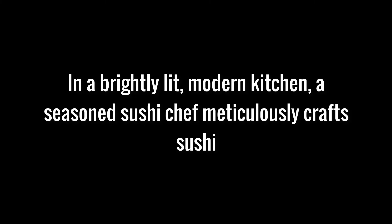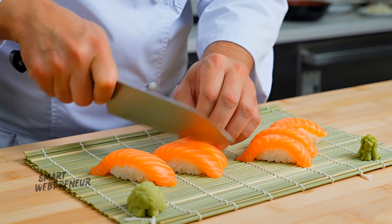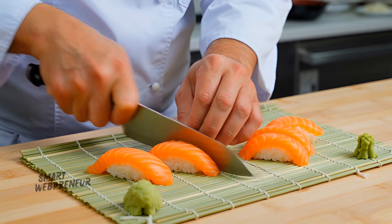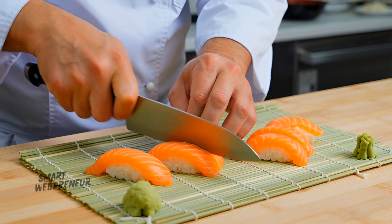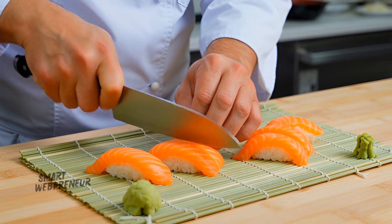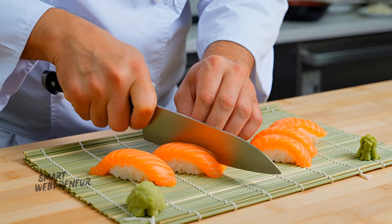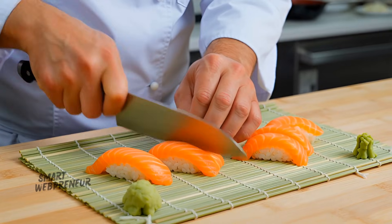Here's the next prompt I tried. In a brightly lit modern kitchen, a seasoned sushi chef meticulously crafts sushi. I was curious to see how the AI would handle detailed hand movements and professional cooking techniques. The attention to detail here is quite impressive. However, the cutting action is slightly off if you look closely. That said, the authentic kitchen environment is spot on, and the sushi making techniques are fairly accurate. The lighting and atmosphere of a professional kitchen are well represented.